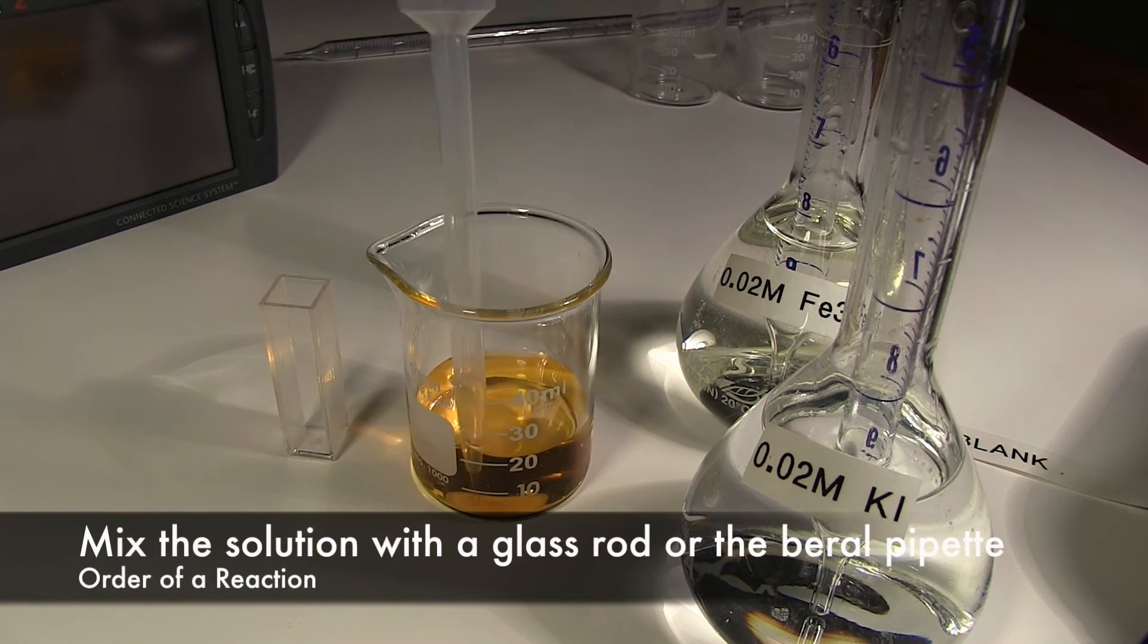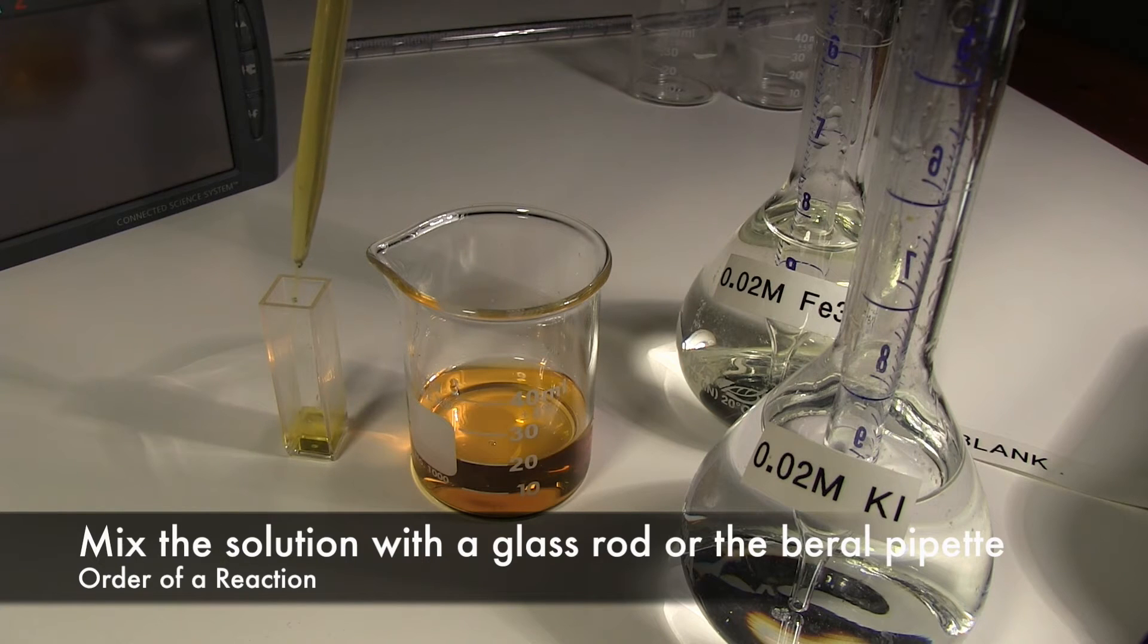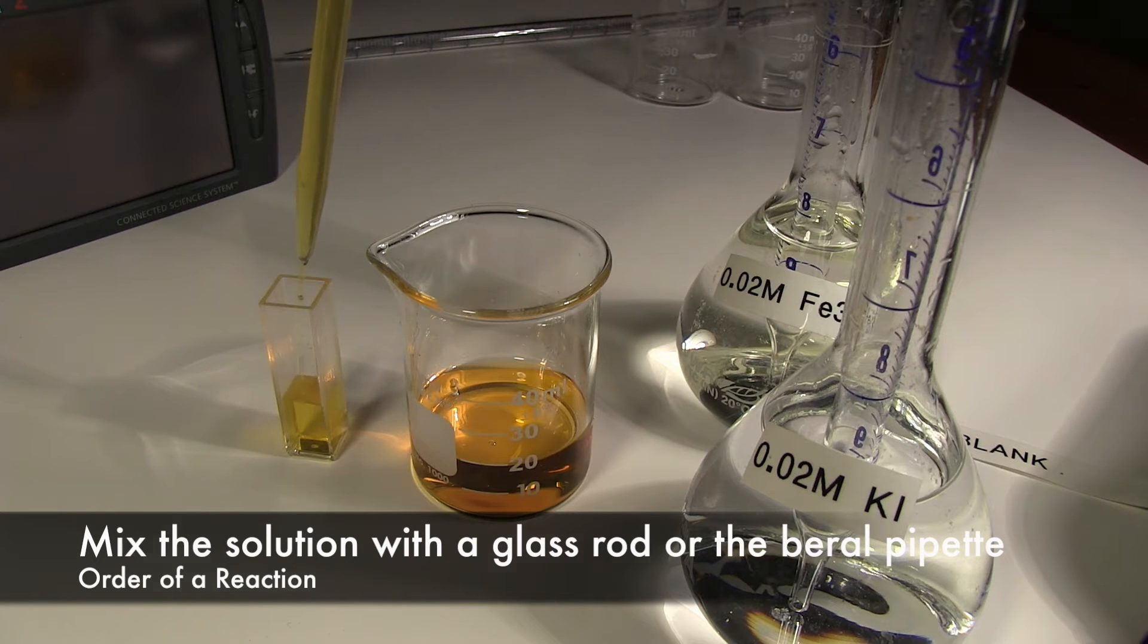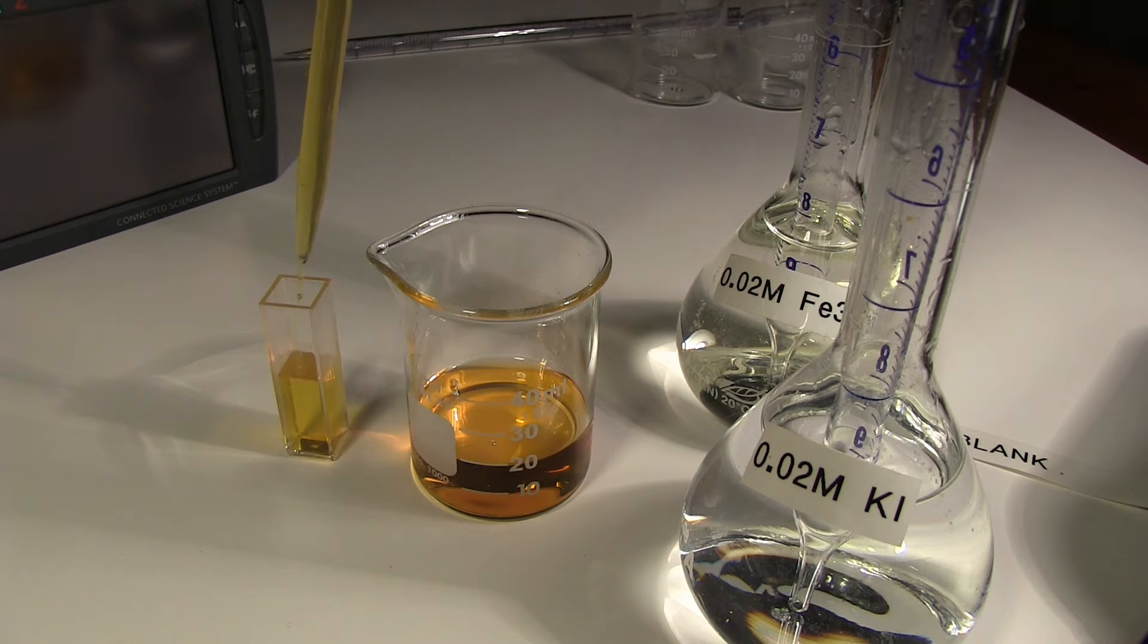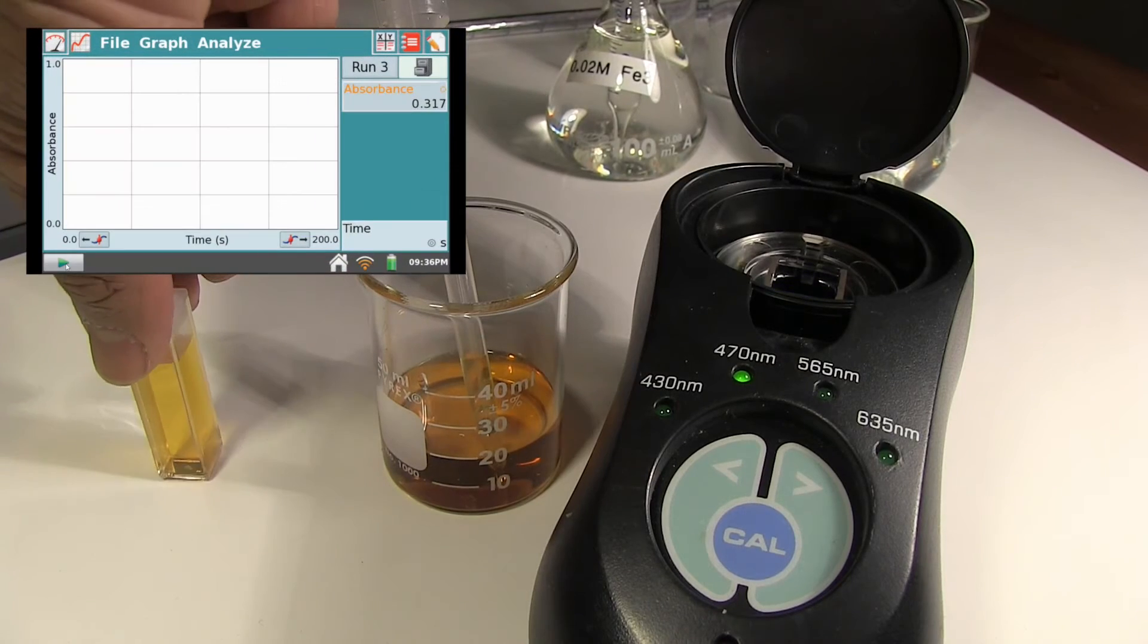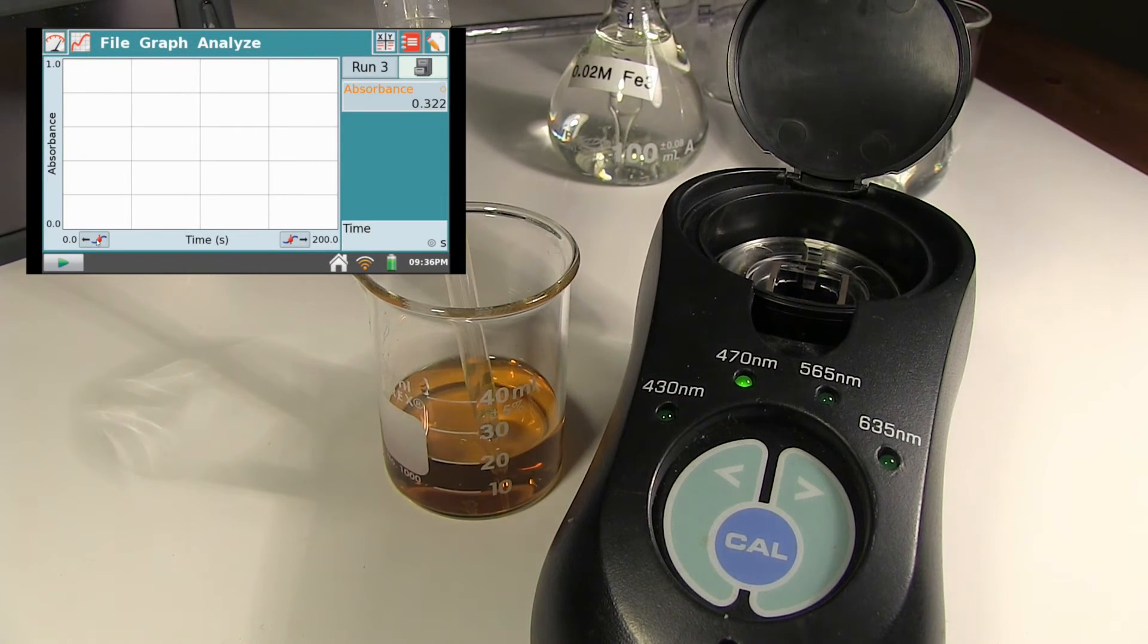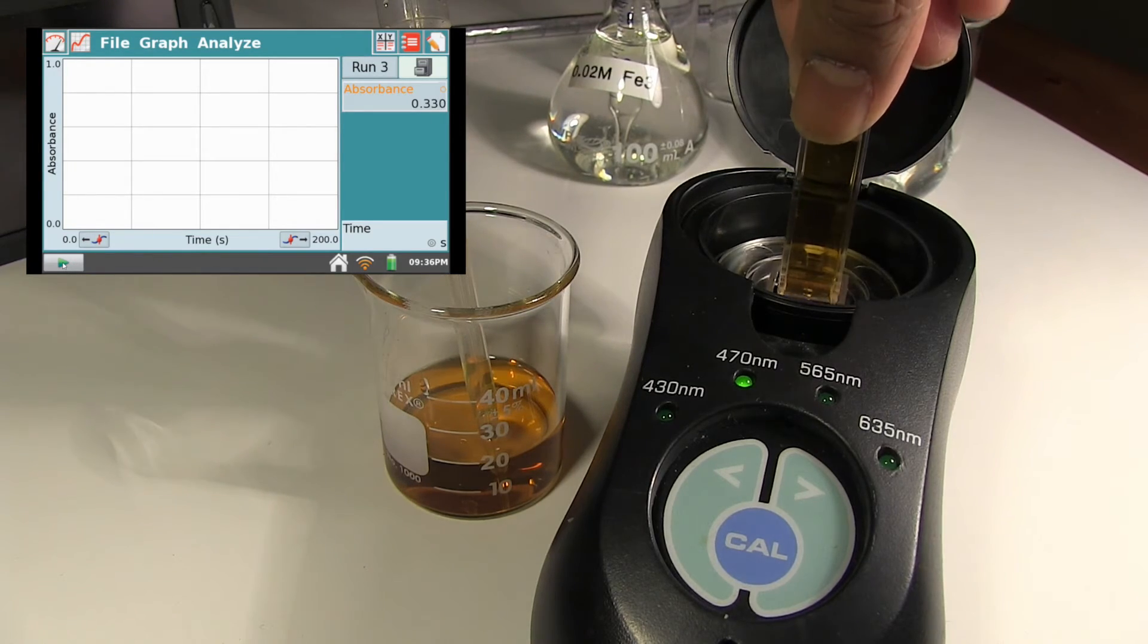Mix the two solutions properly using either a glass rod or the beryl pipette. Transfer the solution to a clean cuvette using the beryl pipette. Place the closed cuvette in the colorimeter as described earlier. Close the colorimeter.